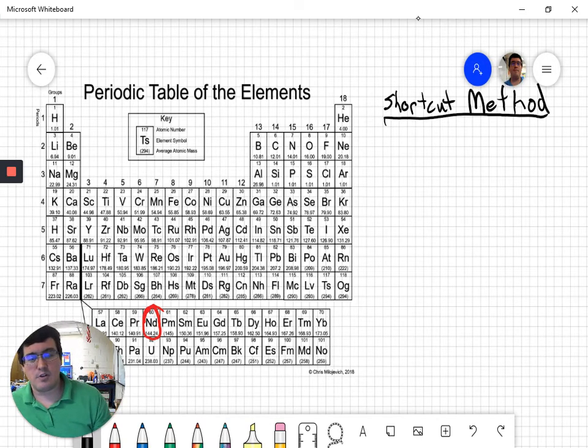If I want to write the electron configuration for neodymium, normally I've been telling you, you've got to start all the way up here at hydrogen. You start as that is 1s. There's another 1s. That's 1s2. Now the next is 2s2. We got blah, blah, blah, blah. It's going to take us forever.